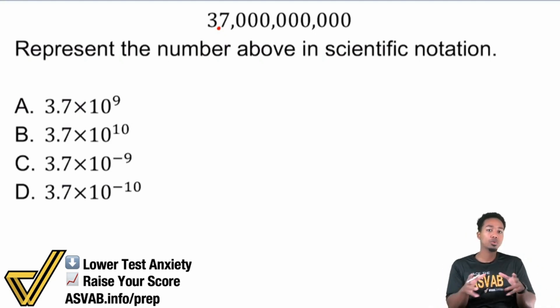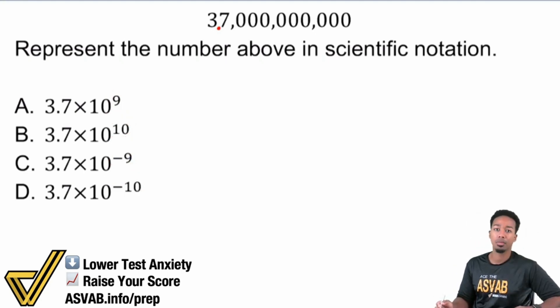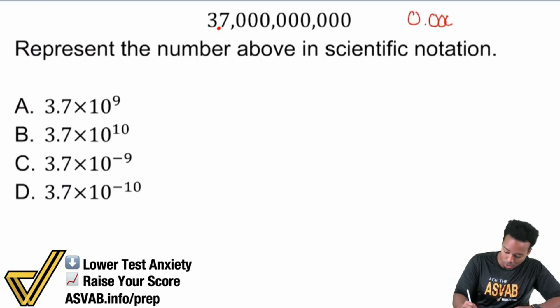Remember this: when it comes to big numbers, we are going to have a positive exponent. Exponent meaning right here. We're going to have a positive exponent if we have a big number. If we have a small number, if we have a decimal, something like 0.00000037, the exponent would be negative.